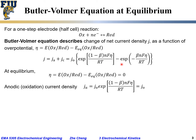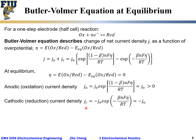Under equilibrium (η = 0), the anodic current density j_a equals j₀ times the first exponential term. Since η = 0, regardless of n or (1−β), exp(0) = 1, so j_a = j₀. We call j₀ the exchange current density — a concept to be explained in greater detail later. The anodic current density at equilibrium equals j₀, which is greater than zero.